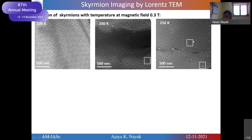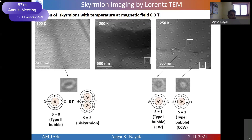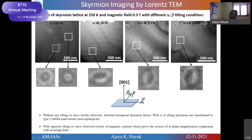With different temperatures, we see different kinds of magnetic objects stabilized. At one temperature, we can see a typical Bloch skyrmion with distinct contrast, but the pictures at 100 K and 200 K are not Bloch skyrmions. People in other materials have interpreted this kind of feature in different ways — some interpret the close-up microstructure at 100 K, which shows alternating black, white, and black contrast, as a biskyrmion with topological winding number two, while others say it is a type-2 bubble with topological number zero.